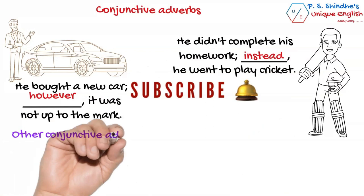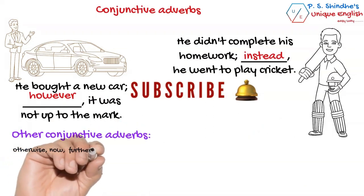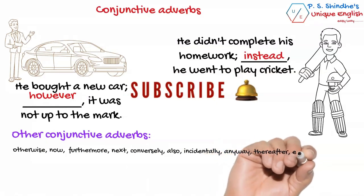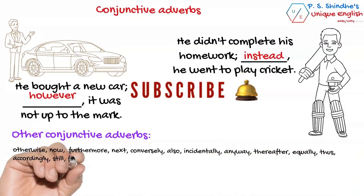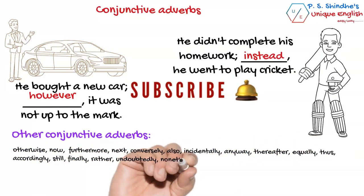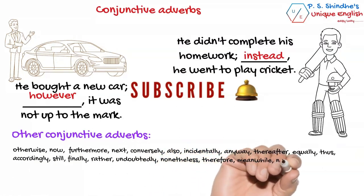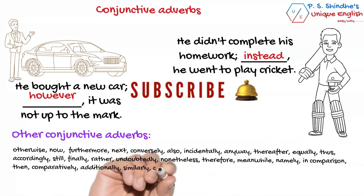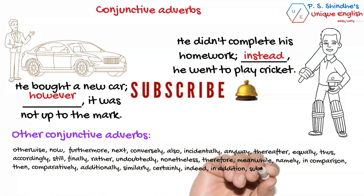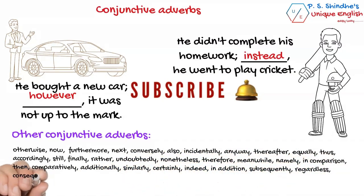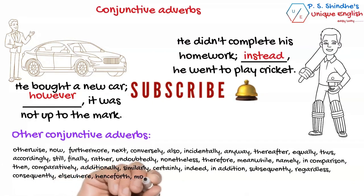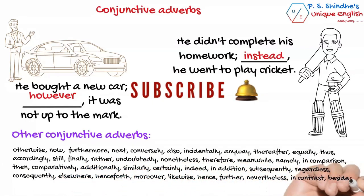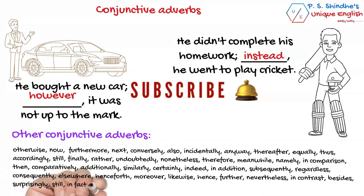Other conjunctive adverbs include: otherwise, now, furthermore, next, conversely, also, incidentally, anyway, thereafter, equally, thus, accordingly, still, finally, rather, undoubtedly, nonetheless, therefore, meanwhile, namely, in comparison, then, comparatively, additionally, similarly, certainly, indeed, in addition, subsequently, regardless, consequently, elsewhere, henceforth, moreover, likewise, hence, further, nevertheless, in contrast, besides, surprisingly, and so on.